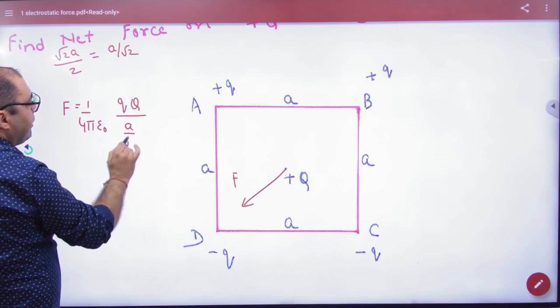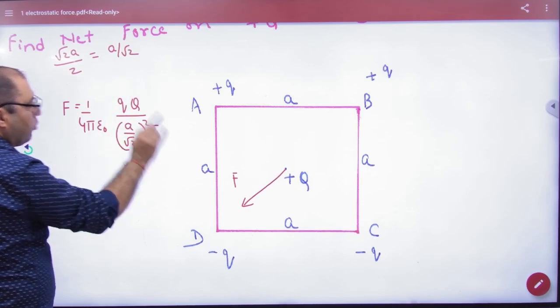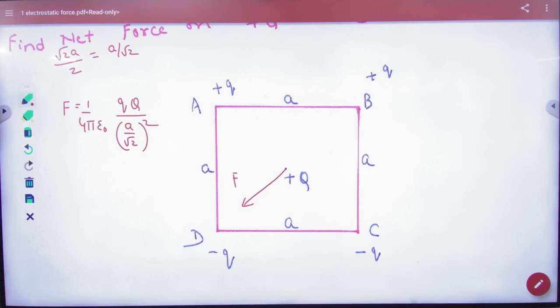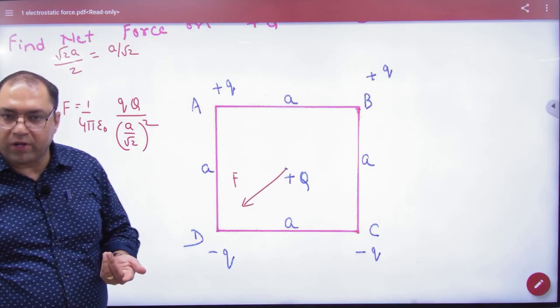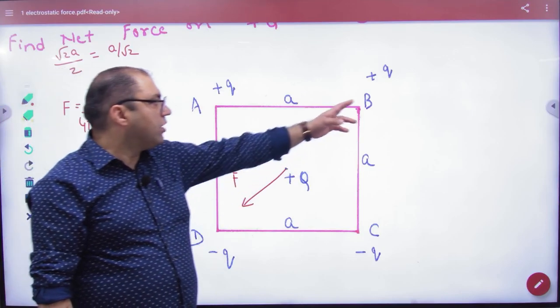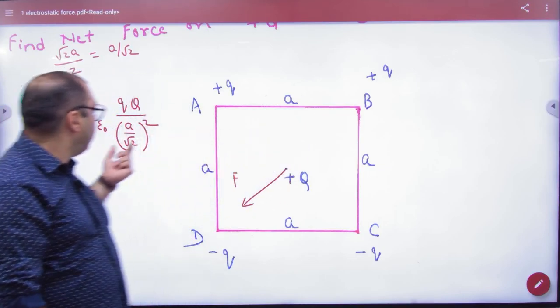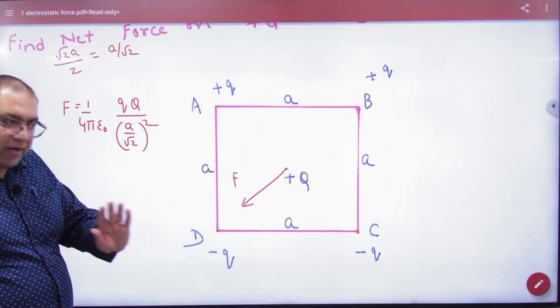So what will it come here? A by root 2 ka whole square. Is it clear? Because distance will be a by root 2, so 1 by 4 pi epsilon naught, q into capital Q by a by root 2 ka whole square. So the first vector clear?